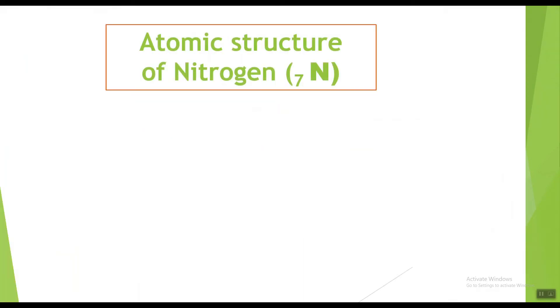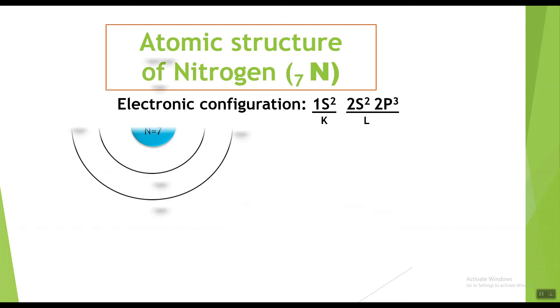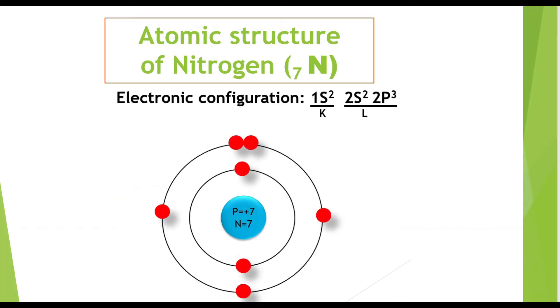Now nitrogen. The symbol for nitrogen is N with atomic number 7, showing it has seven electrons. The electronic configuration of nitrogen is 1s2 2s2 2p3, showing two electrons in the K shell and five electrons in the L shell. The atomic structure of nitrogen shows seven protons and seven neutrons in the nucleus, with two electrons in the K shell and five in the L shell.